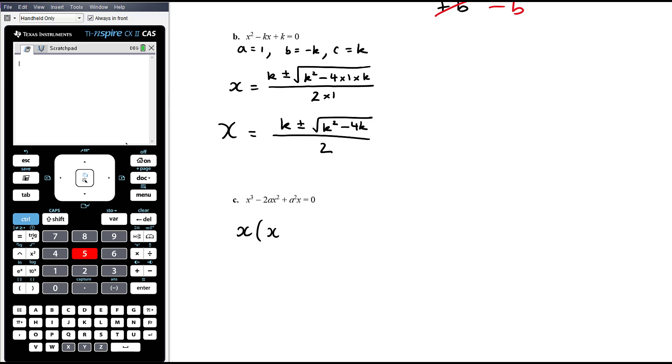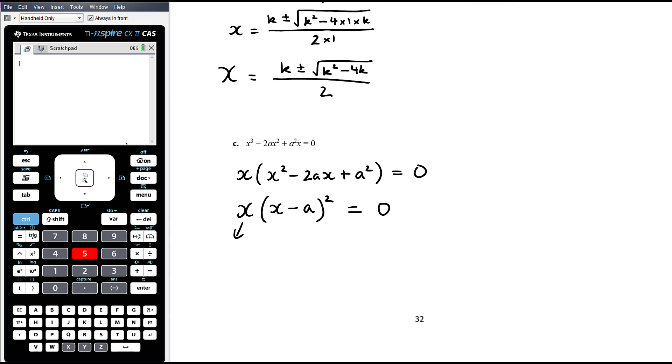So it's x and we're left with x squared minus 2ax plus a squared. And actually, if we recognise that bracket is a perfect square, that's going to be x minus a all squared. And so therefore, solving that equal to 0, either x equals 0 or x minus a equals 0, so x equals a.